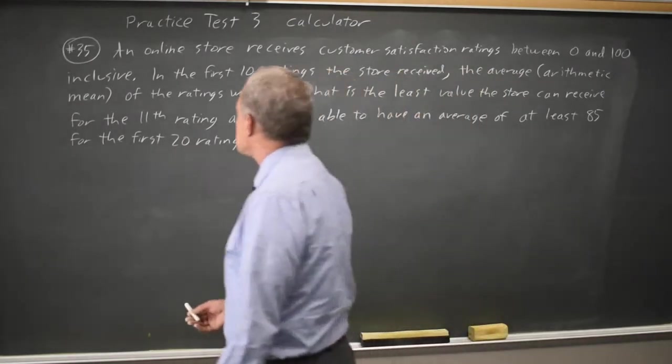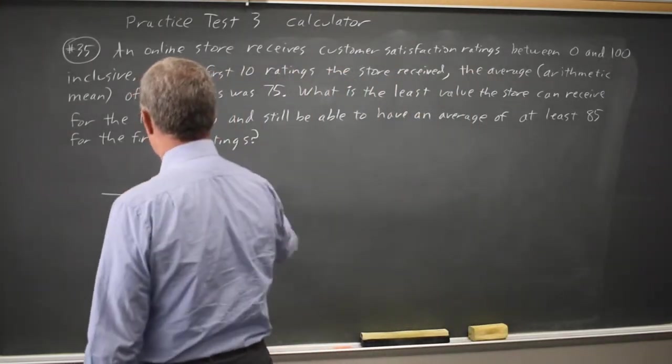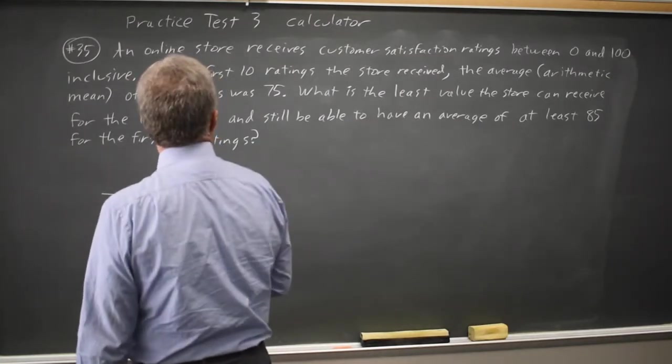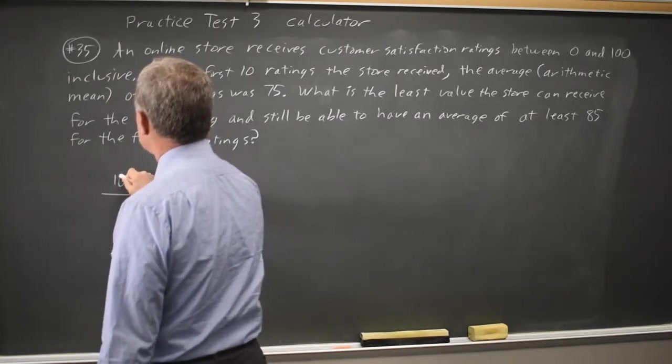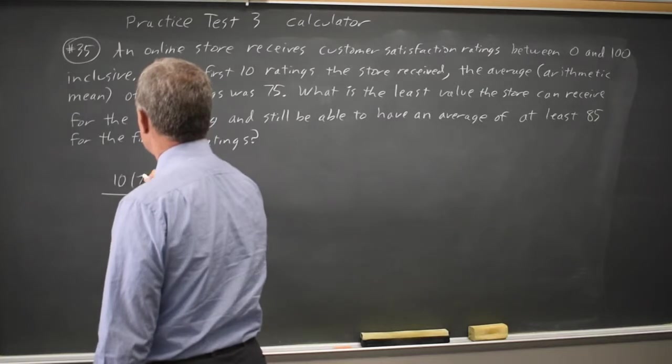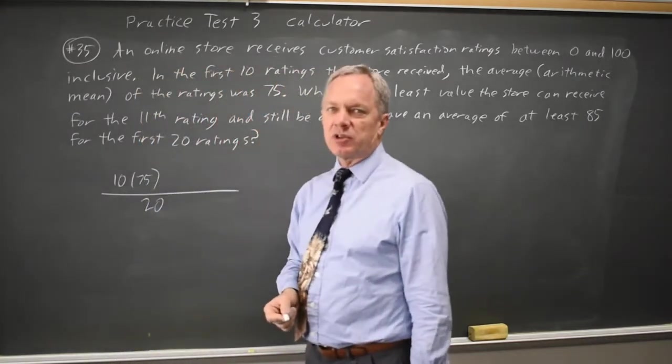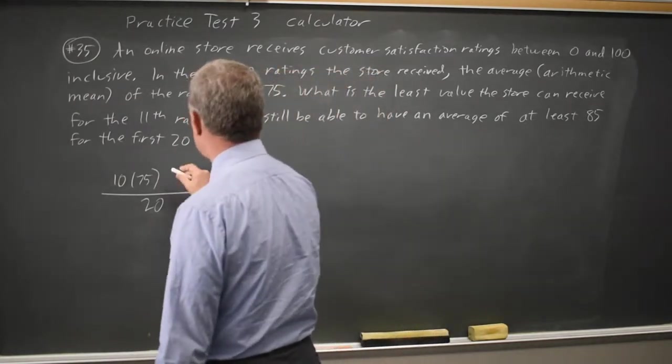So let's write the average of the first 20 ratings. That would be the sum of the first 20 ratings over 20, and the first 10 ratings average 75. So that's 10 times 75 is the first 10 ratings. I can treat that as if they're all 75s because that won't change the average, so it won't change the answer to the question.